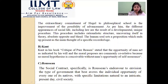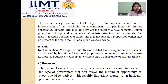Coming to the second propounder, Kant. Kant in his famous book Critique of Pure Reason stated that the freedom of man acts as indicated by his will, and the moral purposes are commonly correlated because no moral hypothesis is conceivable without man's freedom of self-determination. Kant emphasizes the concept of reason — every law is indicated by the will of an individual; will leads to consciousness, consciousness comes from reason. Coming to Rousseau: according to the social contract theory, it was Rousseau's endeavor to envision the type of government that best allows the individual opportunity of every one of its citizens, with specific limitations natural to an intricate modern civil society.